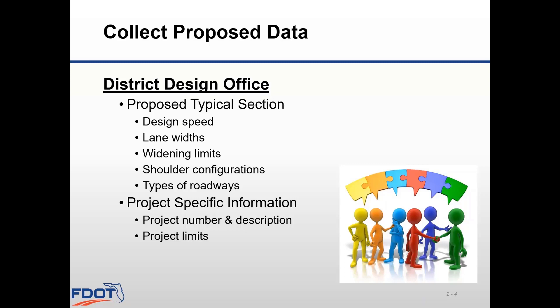Before you go out and look at your project in the field, you'll also need to know more about what's being proposed. Contact your district design office to get the proposed typical section and as many details as possible about widening locations or anything of that nature. The proposed typical section package should have most everything you'll need, including the design speed, limits of any speed changes within the project, and the overall project limits.